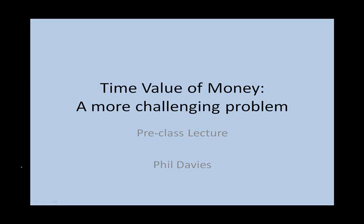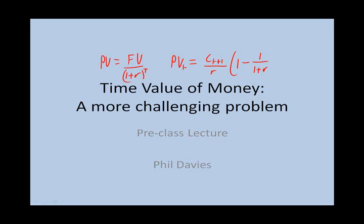In this lecture, we're going to deal with a more challenging problem examining the time value of money, and we're only going to use two formulas. Those two formulas are the present value formula — present value equals future value divided by 1 plus r to the power t — and the annuity formula, where the present value at time t equals the periodic payment starting at time t plus 1, divided by the discount rate, multiplied by 1 minus 1 divided by 1 plus r to the power of capital T.